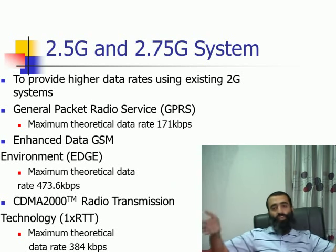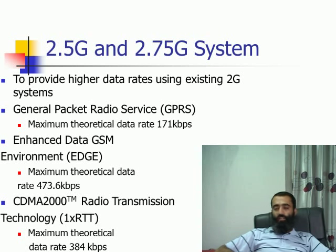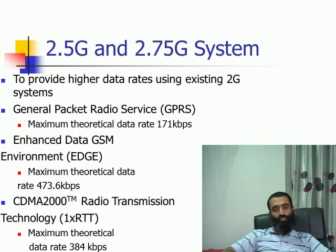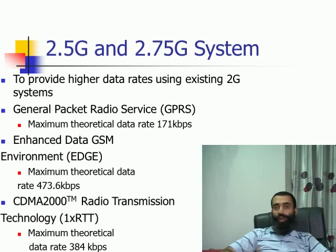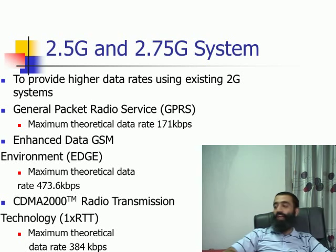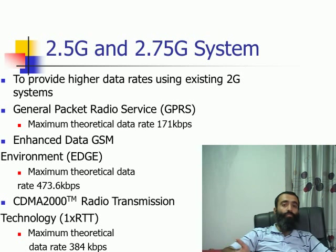The purpose of these intermediate systems was to increase the data rate on mobile phones. One of the 2.5G systems is GPRS — General Packet Radio Service — which could give a maximum theoretical data rate of 171 kbps. Keep in mind this was the theoretical data rate; the actual data rate depended on factors like how many subscribers were in that area and what the propagation conditions were. So the actual data rate a user got was around 50 kbps. GPRS was a 2.5G system and was the evolution of the GSM standard.